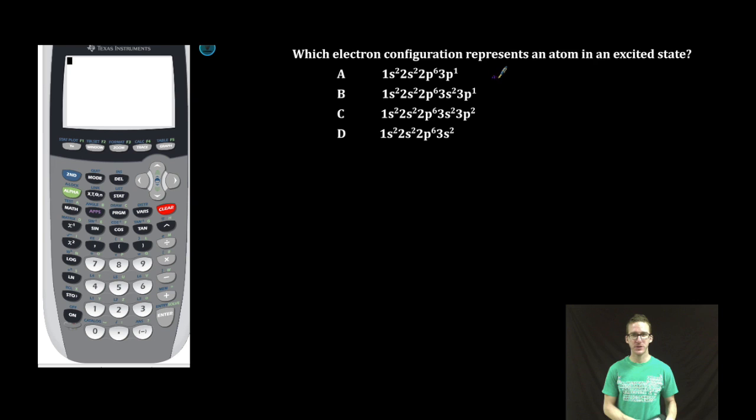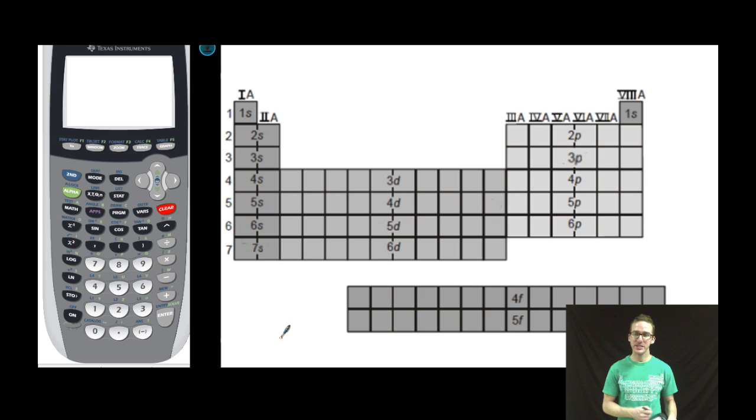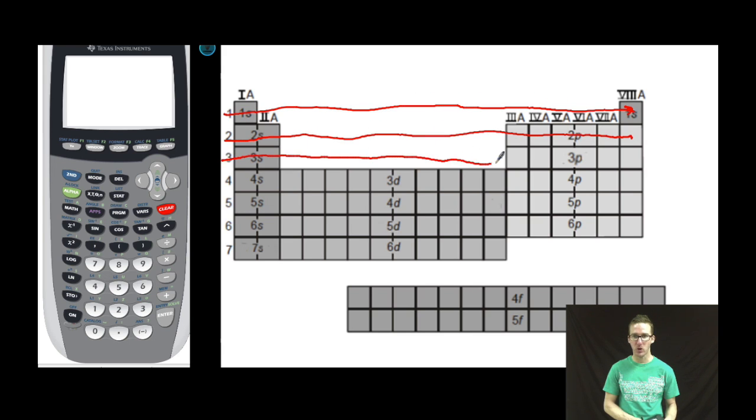Notice that the big difference here is you need to choose that shows a configuration for an excited state. And remember, if it's in the ground state, it's gonna follow the Aufbau rule. In other words, it's gonna fill the lowest energy levels first before it moves through the higher energy levels. Again, your periodic table is gonna hold the key for the order of the orbitals filled from lowest energy to highest energy.